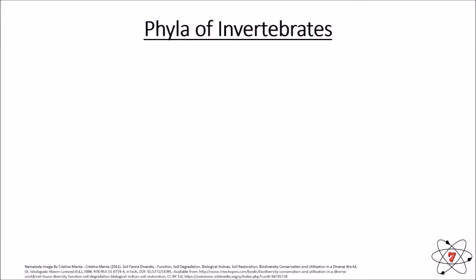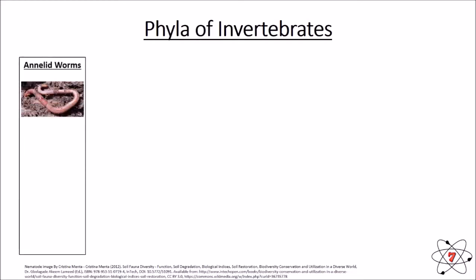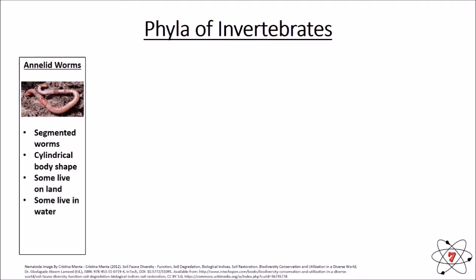Let's have a look first of all at the invertebrates and what we call the phyla. Phyla are the general groups that we can put them into. The first phyla are annelid worms. Annelid worms are segmented worms with a cylindrical body shape — the earthworm is an example, with a cylinder-shaped body and lots of different segments. Annelid worms can either live on land or in water, and they have an opening at the front and the back of their body.